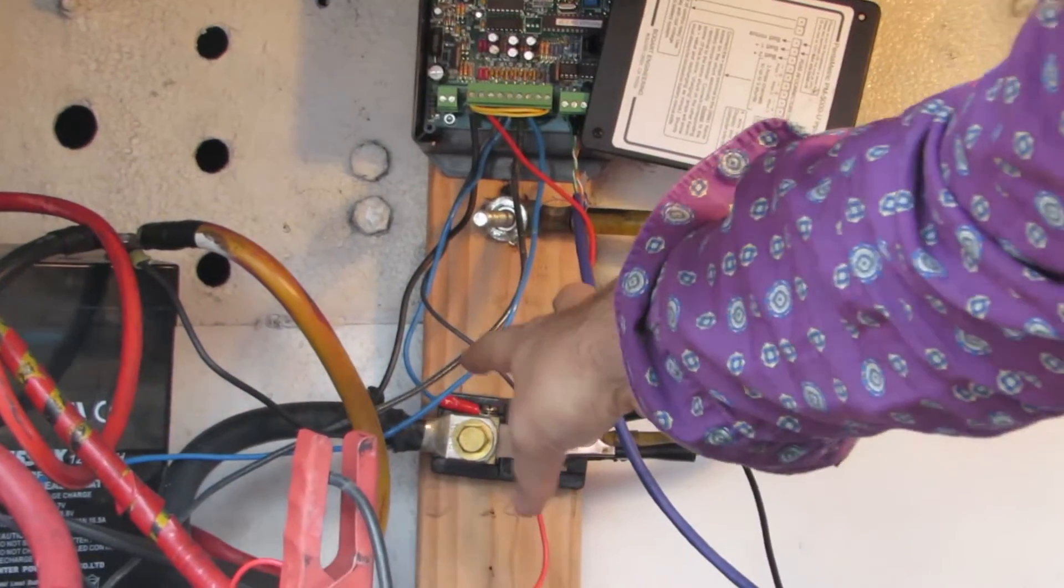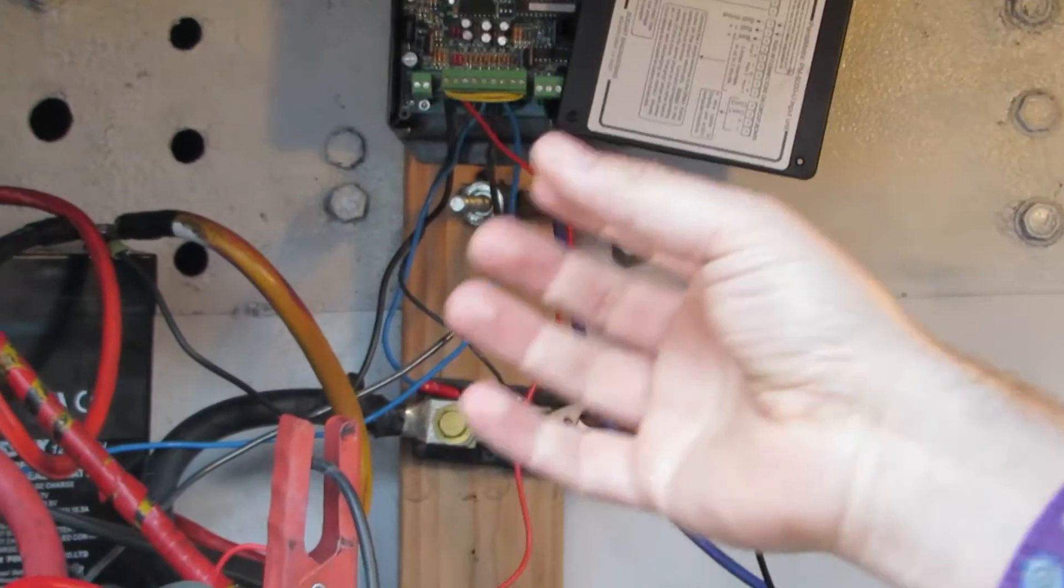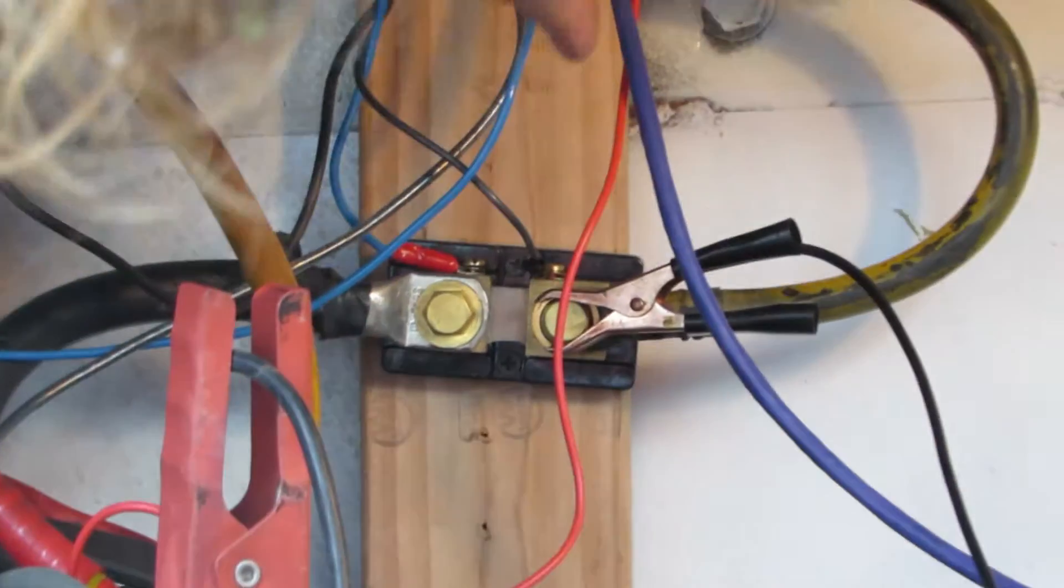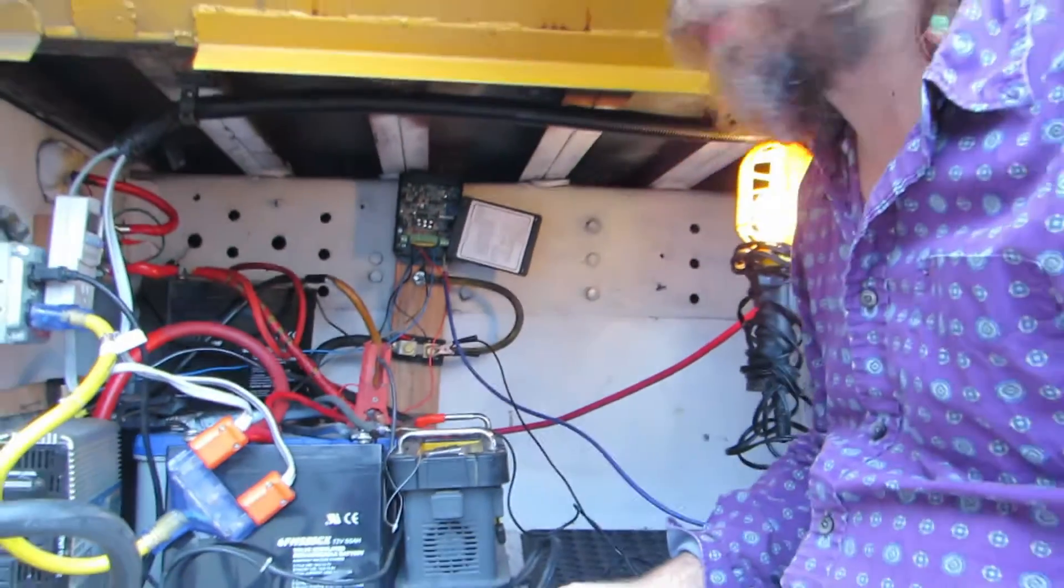Now, this shunt is able then to measure all of the current that is being used by all of those devices throughout the bus, and you can see that the shunt is connected to this device here, that's the Bogart pentametric monitor. And then, the pentametric monitor is connected via this Cat5 cable to the screen, the meter that we have on the energy wall, which we show in a different video.